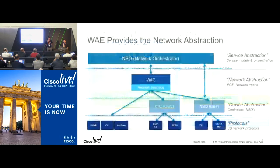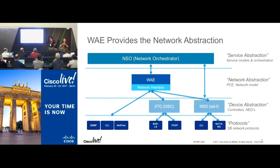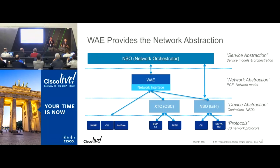WAE provides that network abstraction layer, playing in the middle layer of the diagram. At the infrastructure level, we have protocols — traditional SNMP, CLI, or newer things like BGPLS, PCEP, and even telemetry. By interfacing with those protocols, we gather information about the network. There are two main ways we interact with the network today. One is XTC — our interface using PCEP and BGPLS.